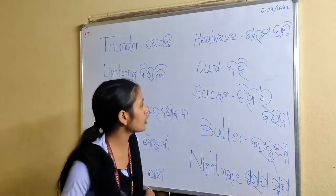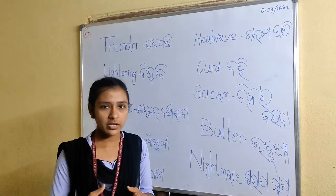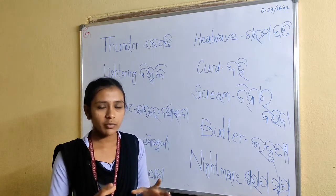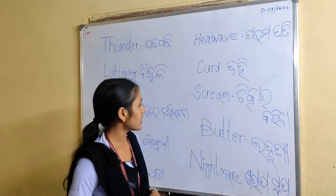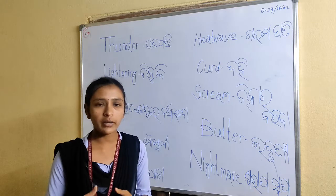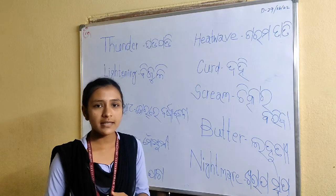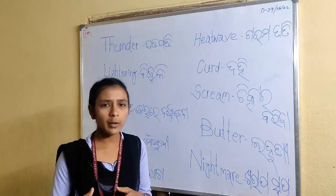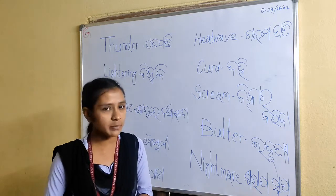The next word is curd. Curd means dohi. Curd is much more famous in our local area. Then the next word is scream. We can make a sentence like: birds are screaming.